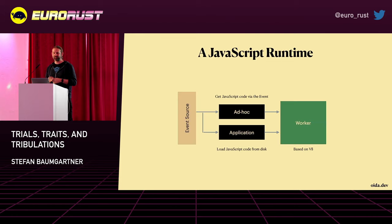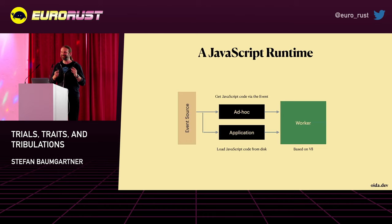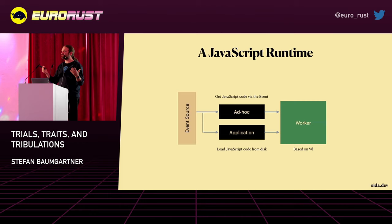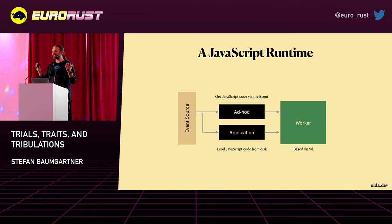Therefore we create two modes. One mode is called application mode, which means you have the files on disk, you load the file and execute it. The other mode is called ad hoc mode, which is even more interesting because you can send a JavaScript workload to the runtime and it executes it. It just comes through an event, needs to execute it and produce the results. We run those two modes into a worker, and the worker is based on Google's V8. There are really nice Rust bindings out there that we use. We create everything in front and use the V8 bindings back there.